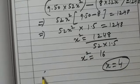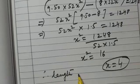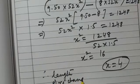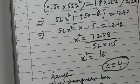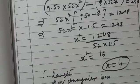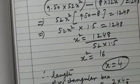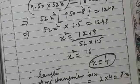So what will be the length? The length of the rectangular box - we assumed the length was 2x. So 2 × 4 = 8 meters.